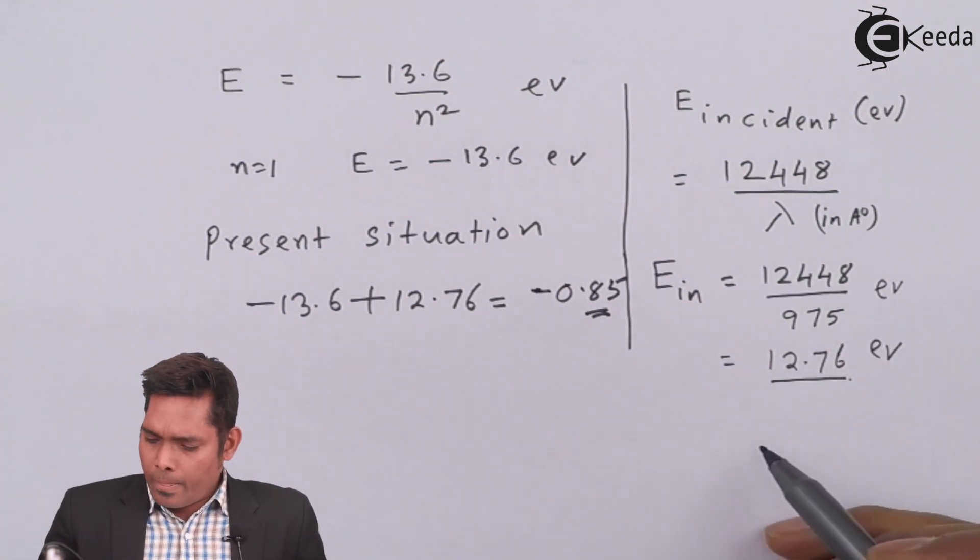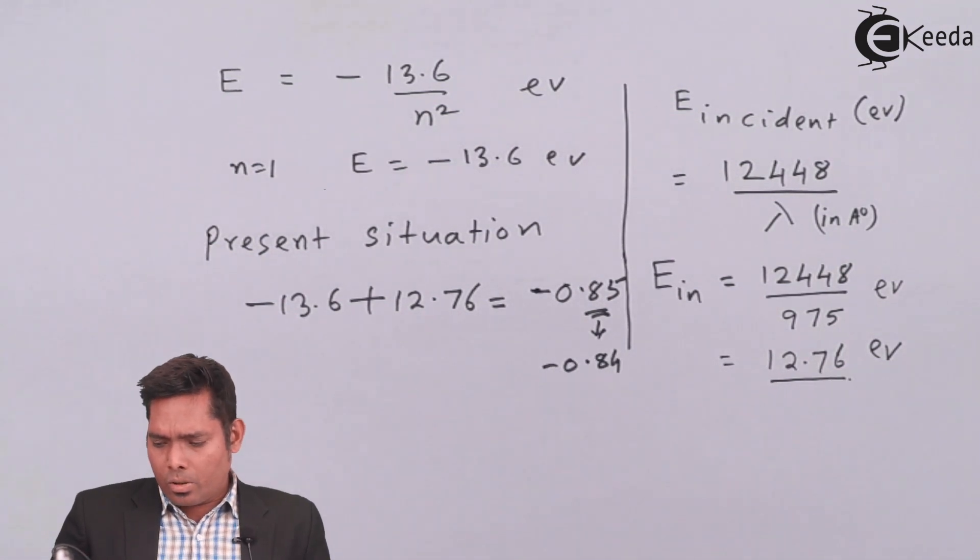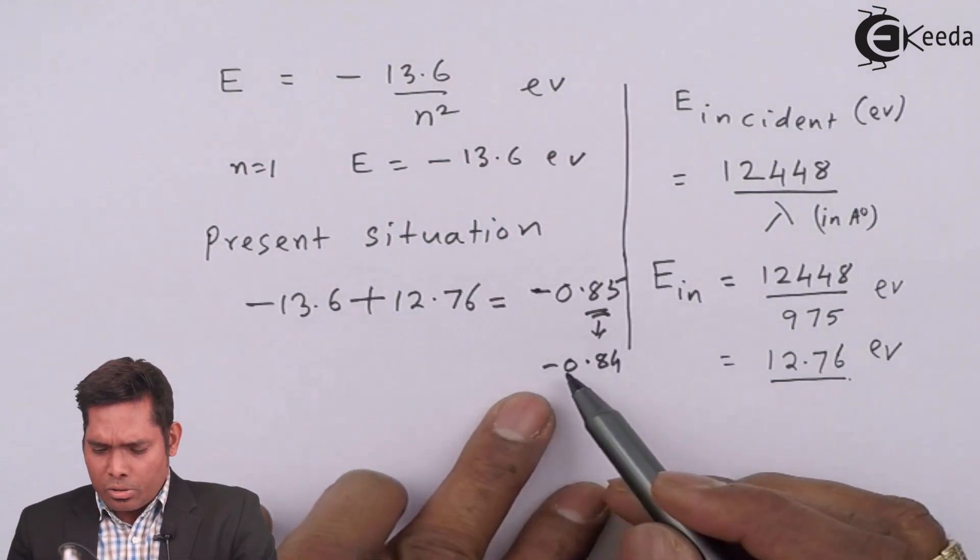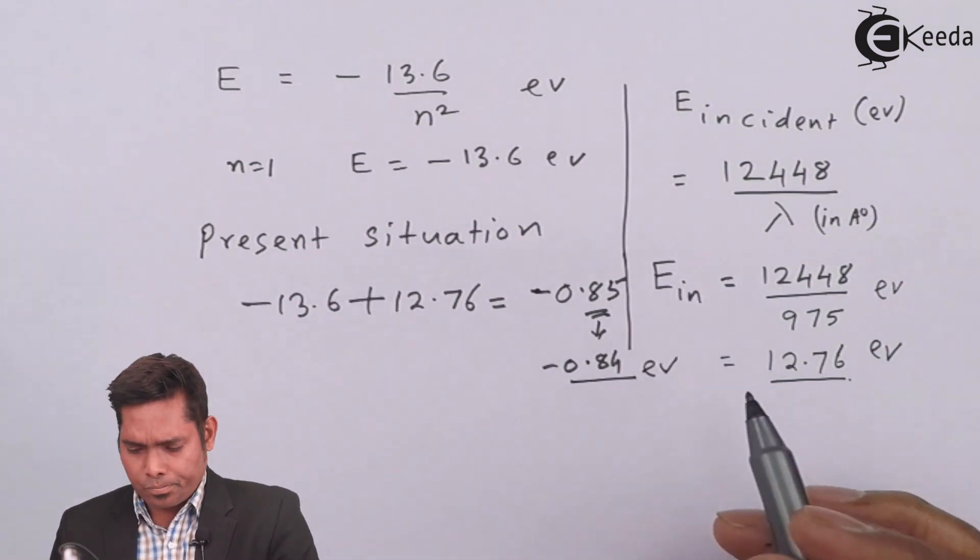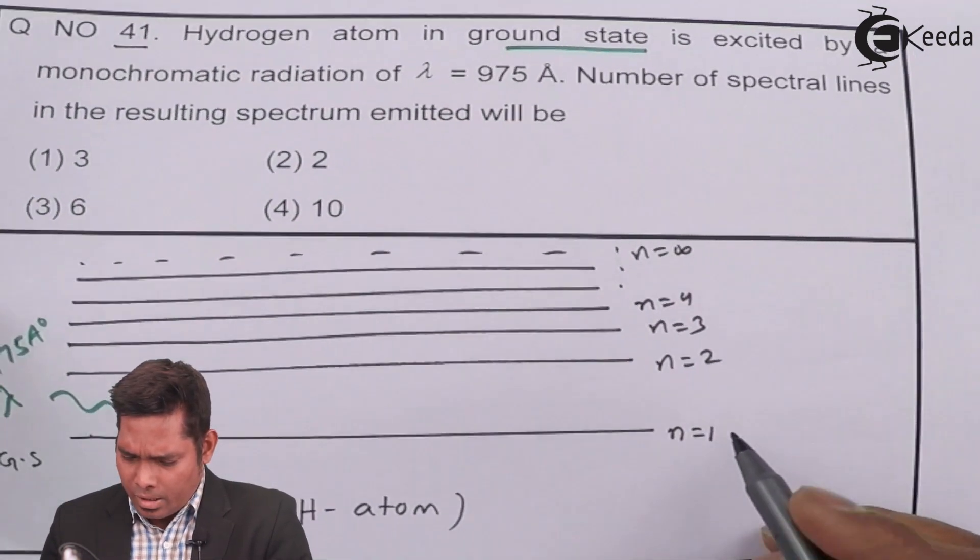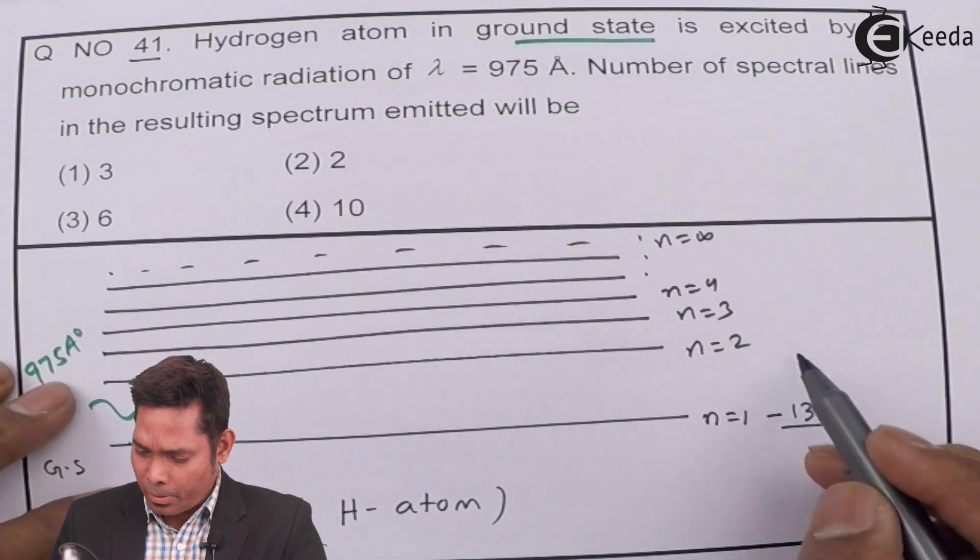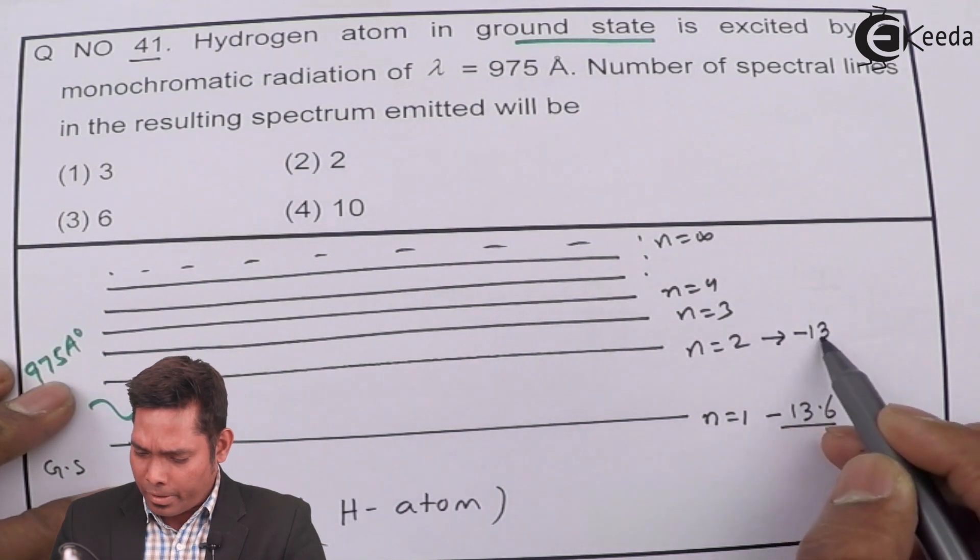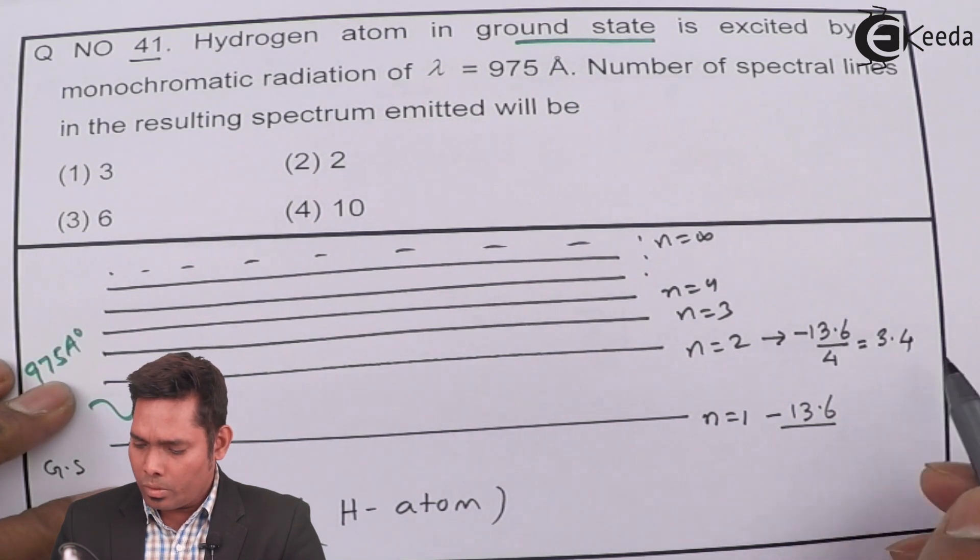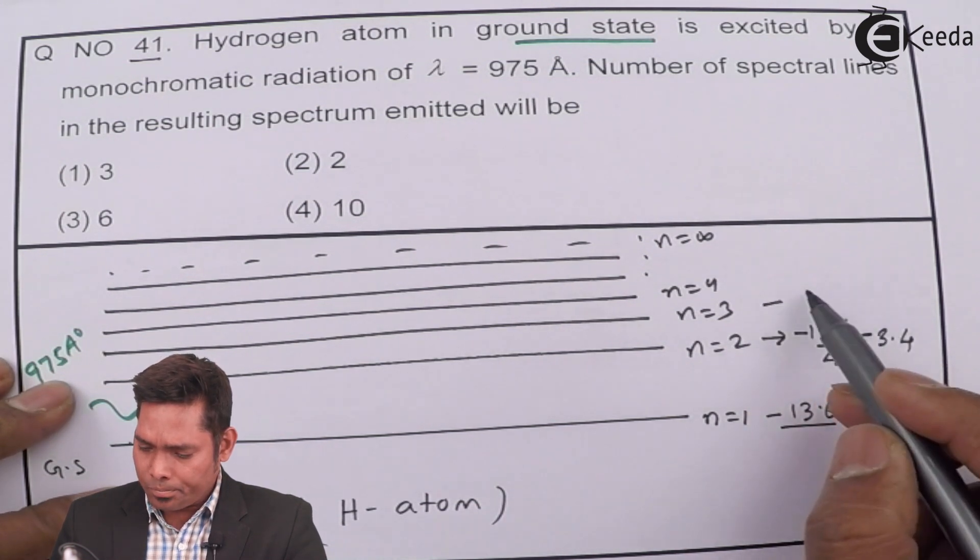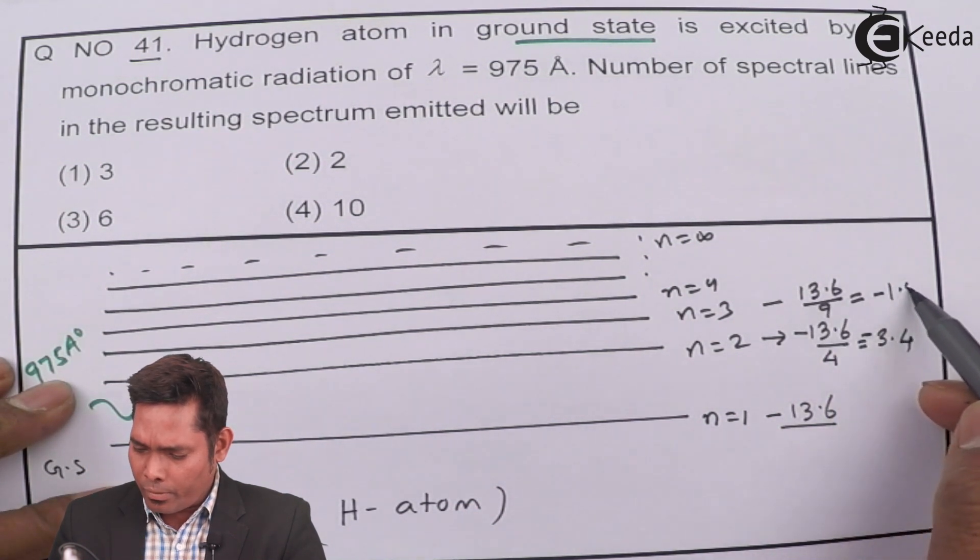This is 0.8485, something like that. Around 0.84. This is minus 0.84 or 0.85, whatever it is. 0.8485, whatever. Approximately, it can take us minus 0.84. So that means if this is the situation now, where the atom is now, that we have to see in this much of energy. We know that this one is minus 13.6. This is the energy level is minus 13.6. This one will be minus 13.6 divided by n square, that is 4, which is 3.4. The next one is minus 13.6 divided by 9, which is minus 1.51, something like that.